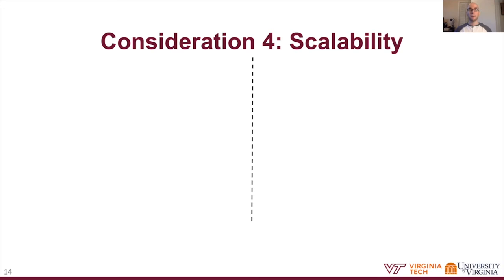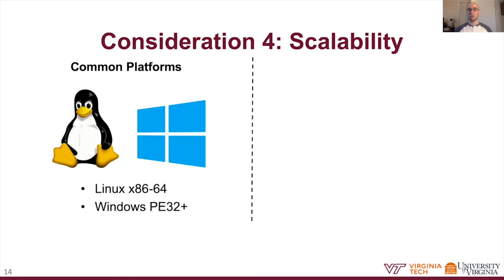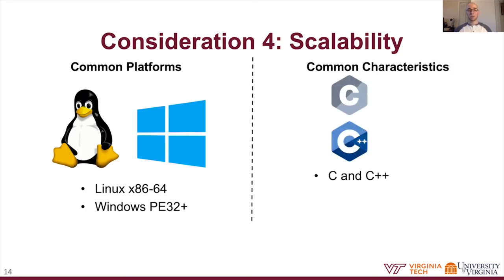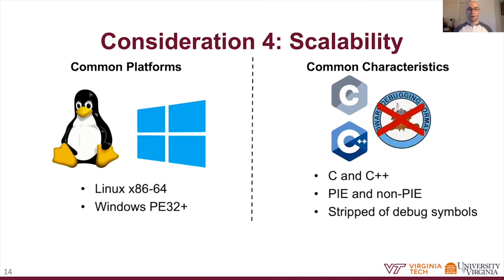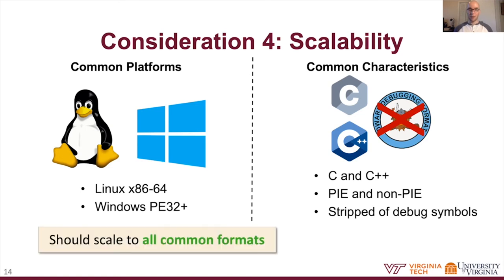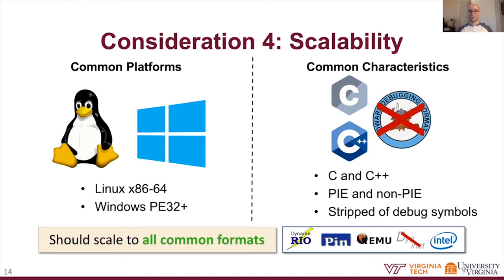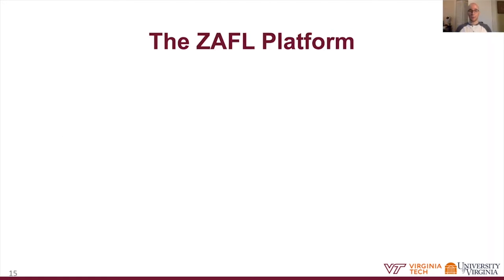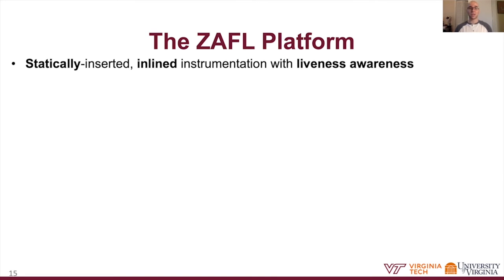Our fourth and final consideration is scalability. Modern compilers are largely platform and language agnostic, but this is a challenge at the binary-only level given binary code's semantic opacity. At minimum, a compiler-quality instrumenter for binary-only fuzzing should support multiple platforms such as Linux and Windows, as well as common languages, code layouts, and characteristics like debug symbol stripping—scaling to all common binary formats. In the binary-only world, only dynamic translators and hardware-supported tracing achieve this scalability, yet neither retains both compiler-quality speed and transformation. As no existing binary fuzzing instrumenters meet all four compiler-quality attributes, we design Zaful: a platform for binary fuzzing instrumentation and transformation upholding statically inserted inline instrumentation with liveness-aware optimization.